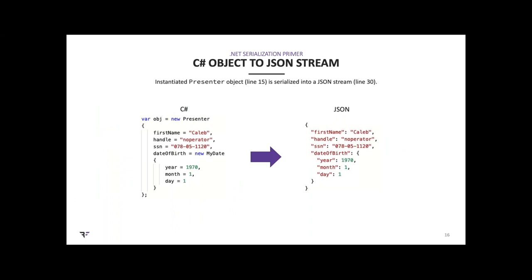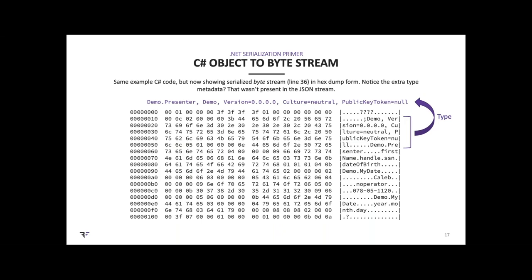Here's the JSON stream — you can see the object instantiated in memory and what it looks like serialized as JSON, where all the attributes are visible. Here's the byte stream in a hex-dump view: raw bytes on the left, ASCII representation on the right. It's similar to the JSON stream but includes extra metadata called the type of the object it should be instantiated as, which informs the deserializer exactly what type of object to create.